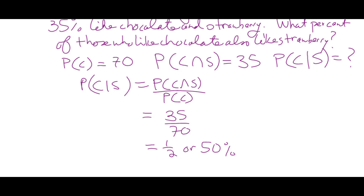You have to understand what each symbol means. Nothing on the formula sheet tells you whether this is for dependent or independent events, or mutually exclusive versus non-mutually exclusive. You have to work through problems until you recognize: we're using the word 'and,' we're not replacing things — that's a dependent event using this formula. Figure out what you're given and what you need to find. Also, any answer must be less than 100% — you can't have a probability greater than 100%.